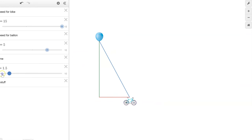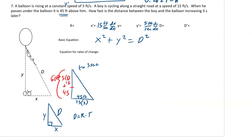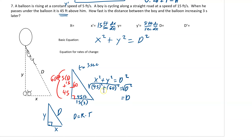The balloon started at 45 feet and went up 15 more, so y = 60 feet. x = 45 feet. Using x² + y² = d²: 45² + 60² = d². Plugging into a calculator gives d = 75 feet. So at t = 3 seconds: x = 45 feet, y = 60 feet, and d = 75 feet.